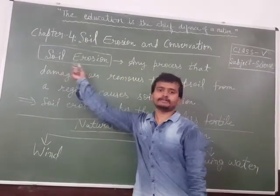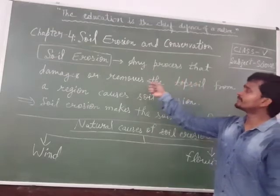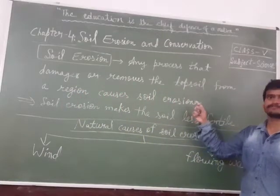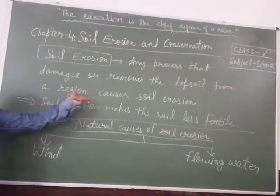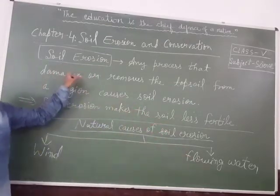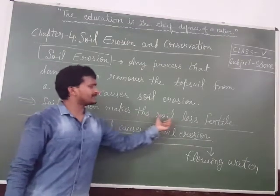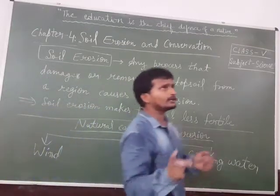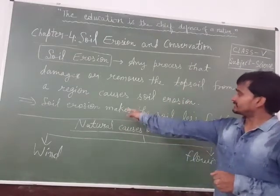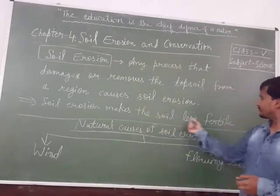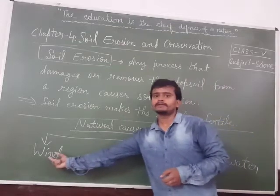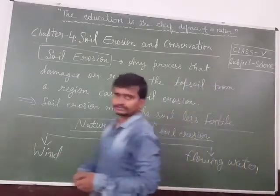Now we will study soil erosion. Any process that damages or removes the topsoil from a region causes soil erosion. Or we can say the removal of topsoil from one place to another due to wind or water is known as soil erosion. The natural causes of soil erosion are wind and flowing water.